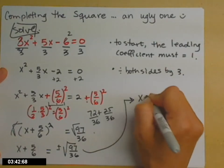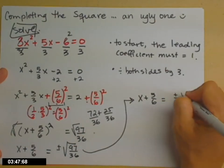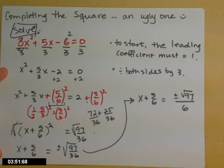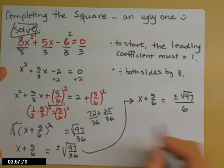So I have x plus 5 sixths equals plus or minus. I'm going to break up the radical, one for the top, one for the bottom. And I'm going to simplify the bottom, because the square root of 36 is 6. And then final step to get x by itself would be to subtract 5 sixths from both sides.